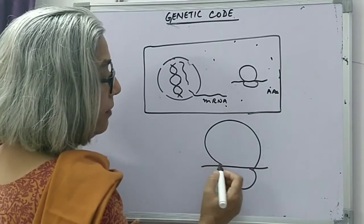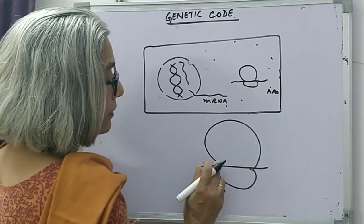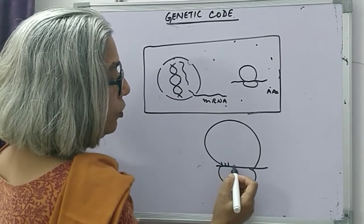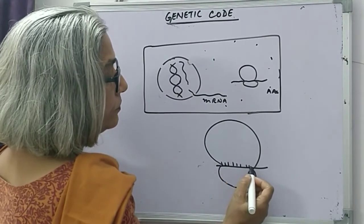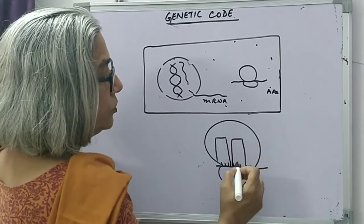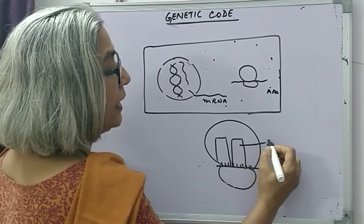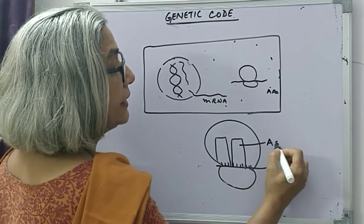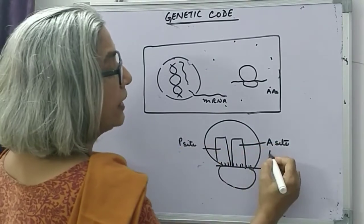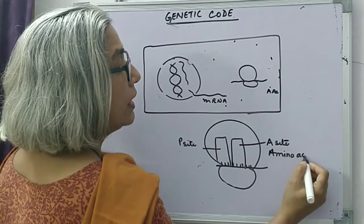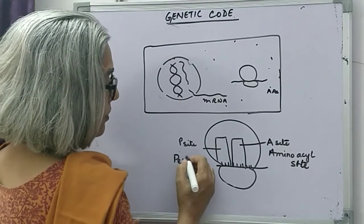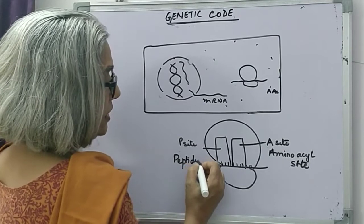The mRNA has codons. There are two sites in the ribosome: one side is called the A side, which stands for aminoacyl site, and the other side is called the P side, which stands for peptidyl site.